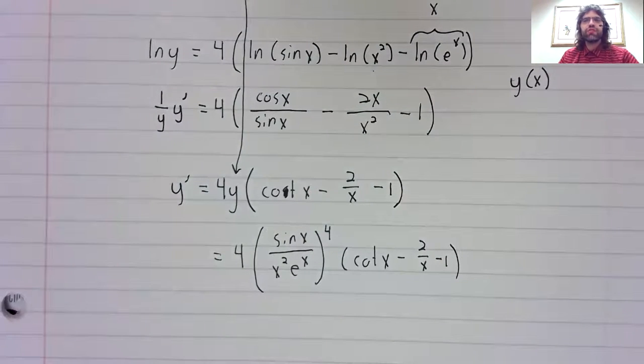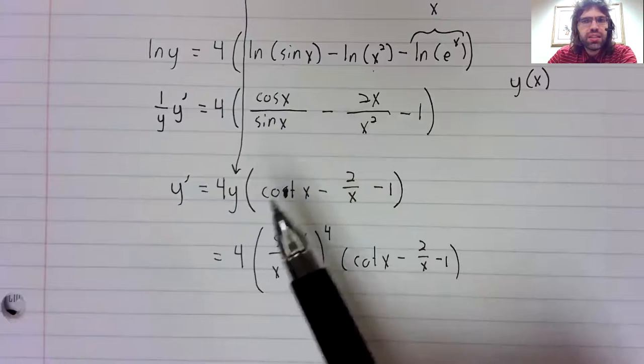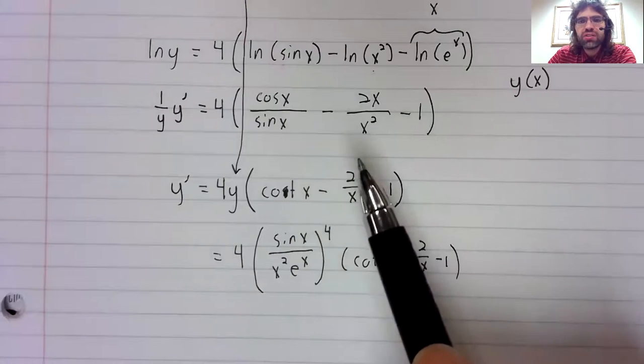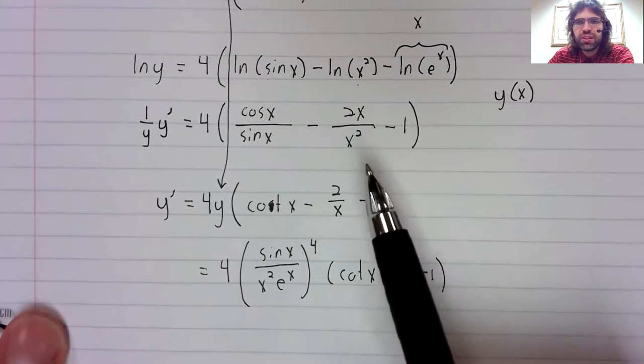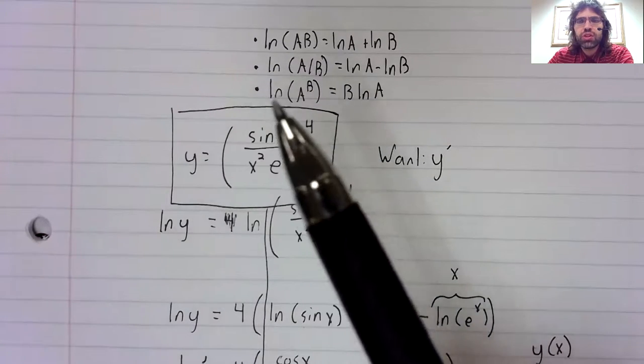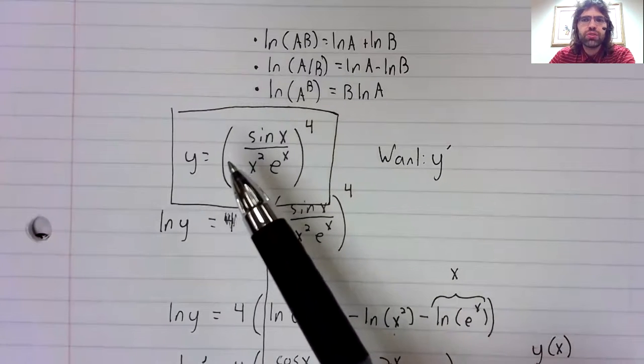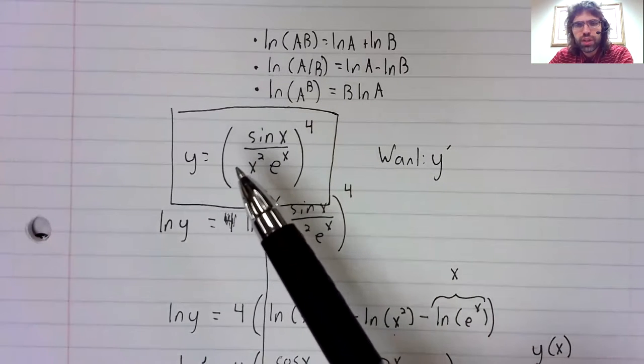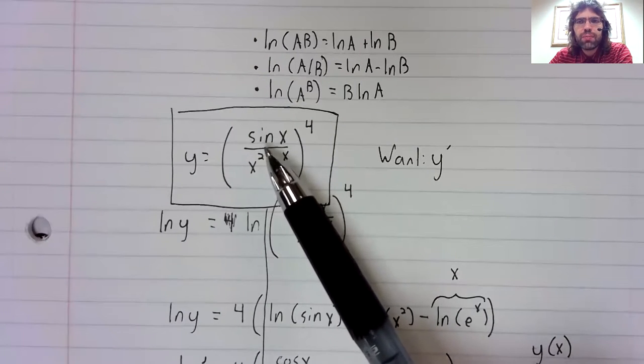And that's logarithmic differentiation. I would personally find this to be the easiest way of solving this problem, of finding this derivative. I would find this method easier than powering through with the chain rule and then having to use the quotient rule and then having to use the product rule. Having said that, you certainly could take this derivative that way if you wanted to.